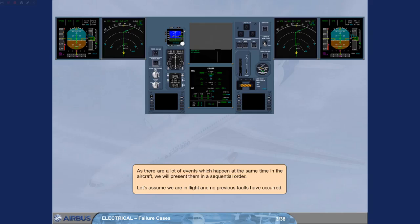As there are a lot of events which happen at the same time in the aircraft, we will present them in a sequential order. Let's assume we are in flight and no previous faults have occurred.